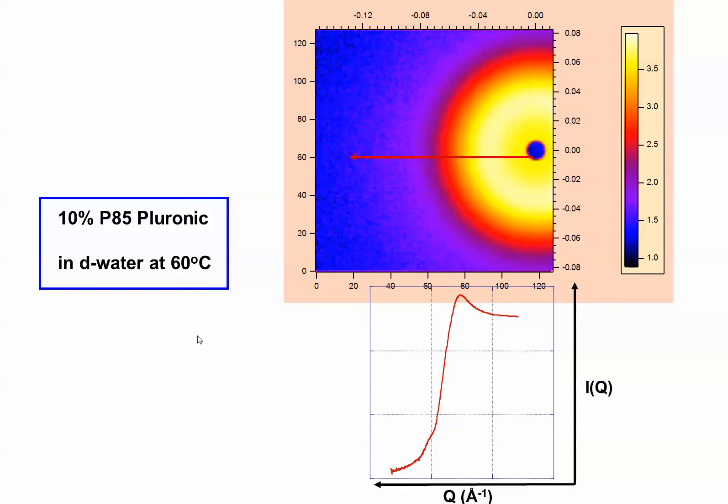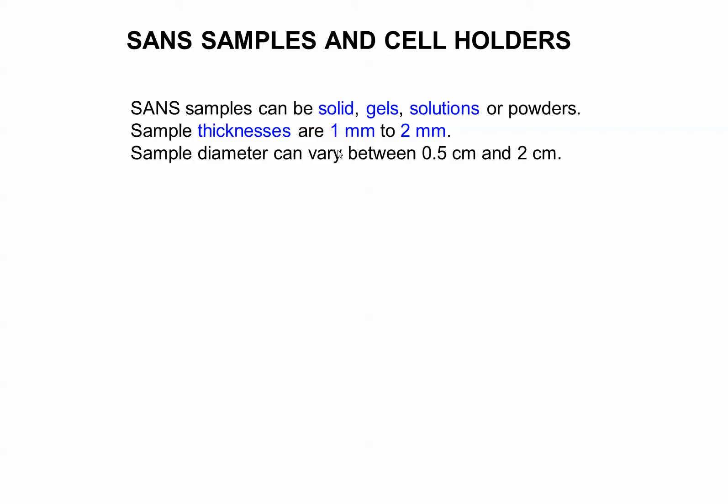This is plotting it backwards, intensity versus Q. But that's what we're dealing with, doing an averaging like this.